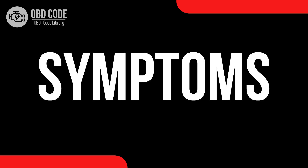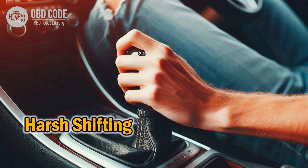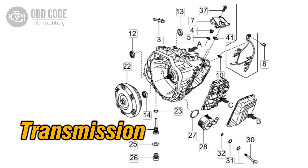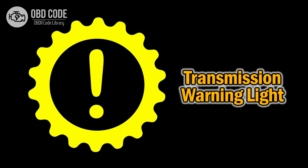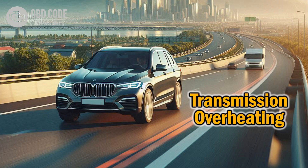Code symptoms P0989: 1. Harsh or delayed gear shifts. 2. Erratic transmission behavior. 3. Transmission warning light. 4. Transmission overheating.